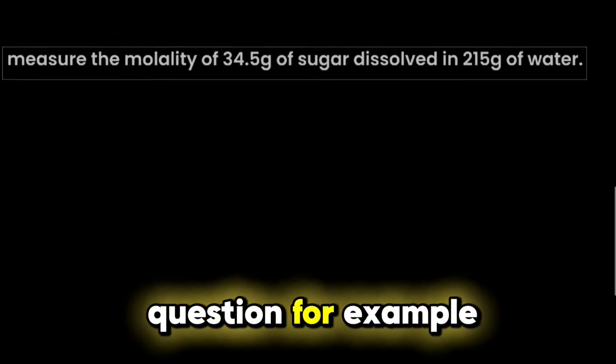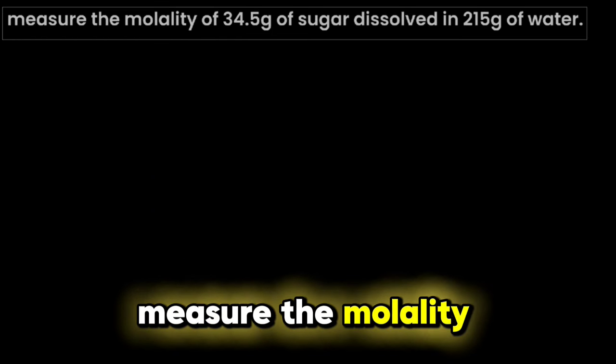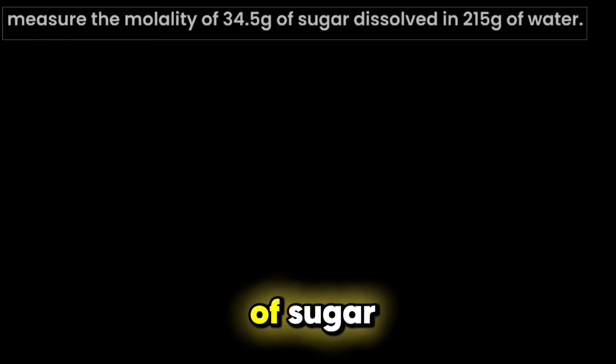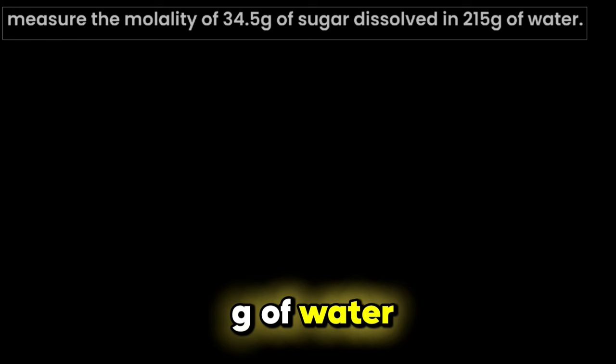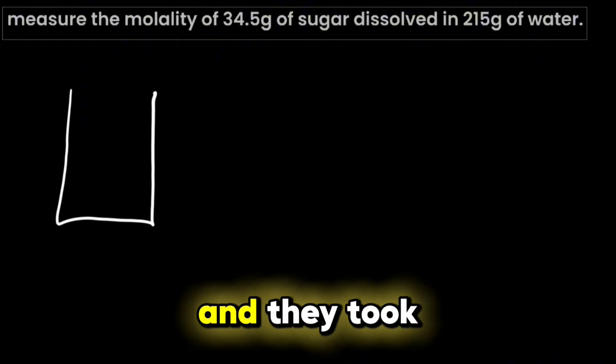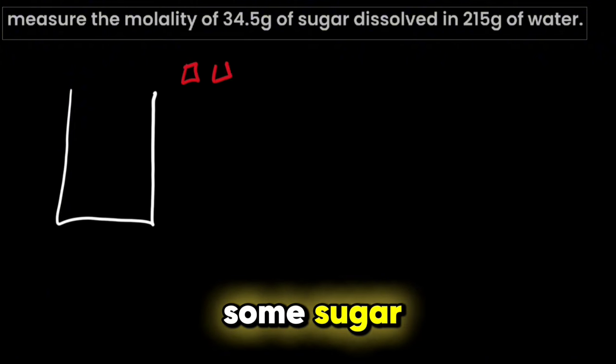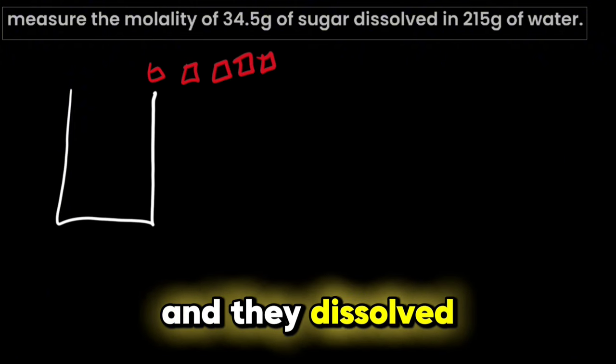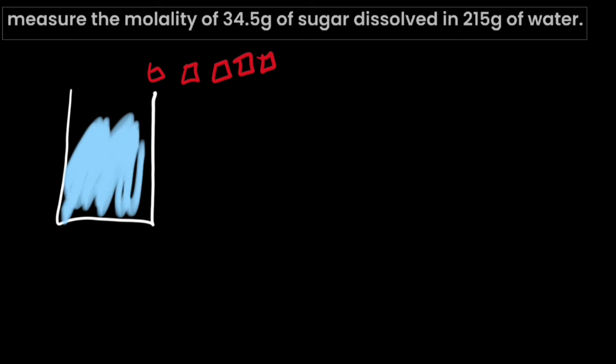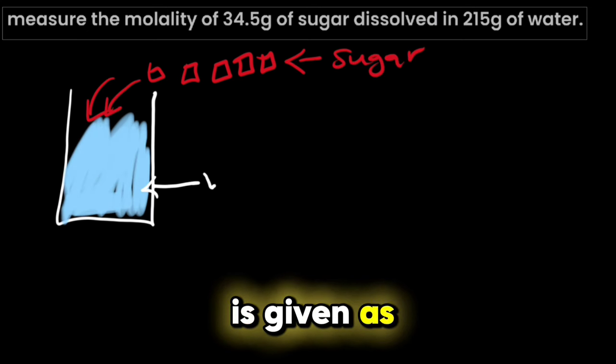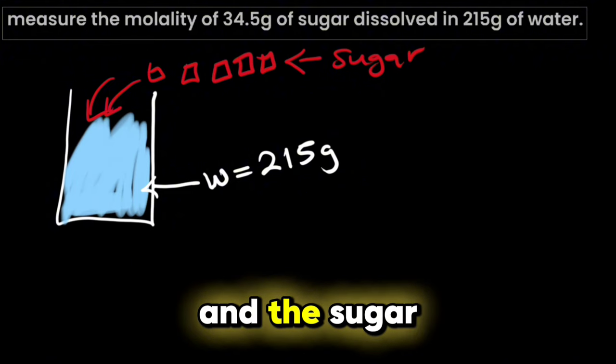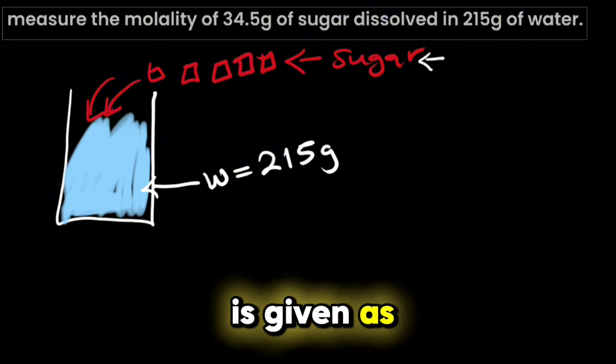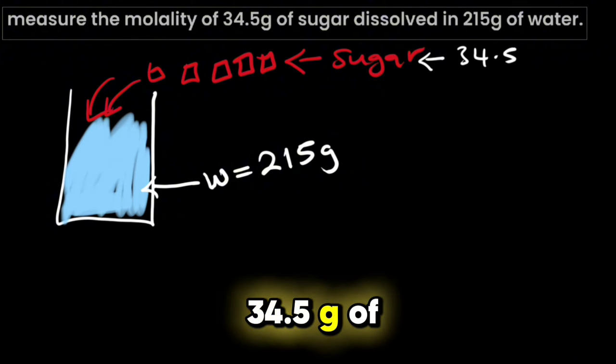Let's take this question for example. Measure the molality of 34.5 grams of sugar dissolved in 215 grams of water. So let's say if you have a jar here and they took some sugar and they dissolved it in water. Now the water is given as 215 grams and the sugar is given as 34.5 grams of sugar.